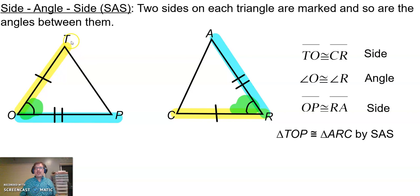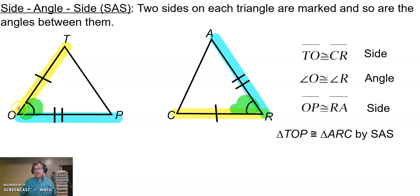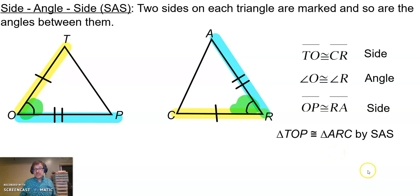So triangle TOP is congruent to triangle CRA by Side-Angle-Side. Pay attention to the order: I started at the end of the yellow side, down to the green angle, across the blue. The next triangle starts the same way — yellow side, green angle, blue side. When writing our congruent statement, order matters.